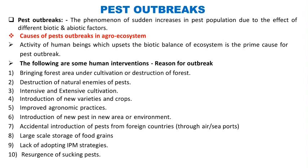These are the categories of pests. Now, how do pest outbreaks occur? Pest outbreaks is the phenomenon of a sudden increase in pest population due to the effect of different biotic and abiotic factors. There are 10 general causes of pest outbreaks.